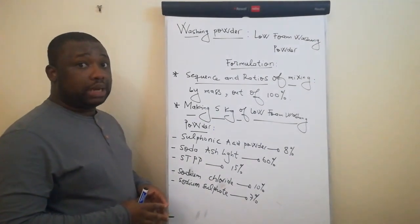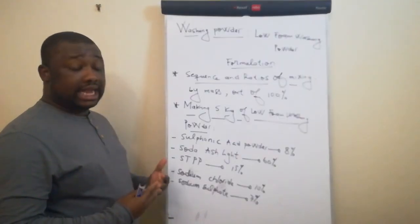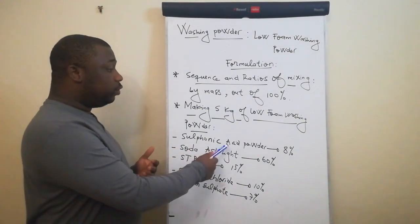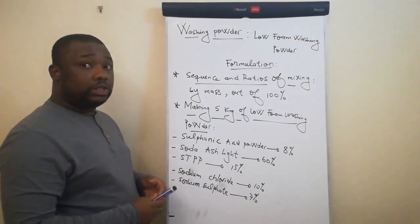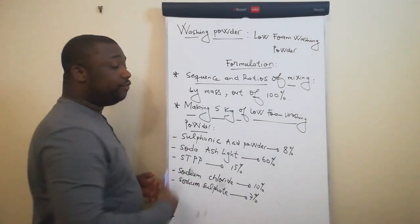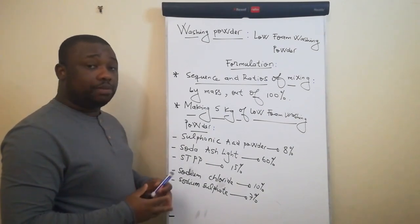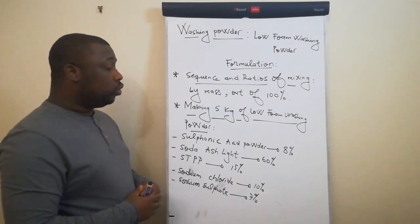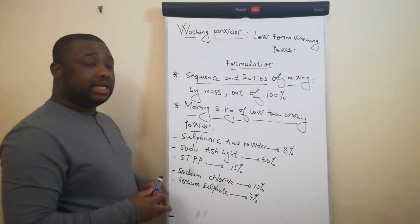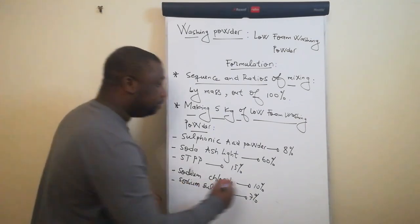Let's consider manufacturing 5 kg of low foam washing powder. This is done by mass. The first ingredient, sulfonic acid powder, should be 8% of the total mass. Out of the 5 kg that we're manufacturing, we're going to need 400 grams of sulfonic acid powder.